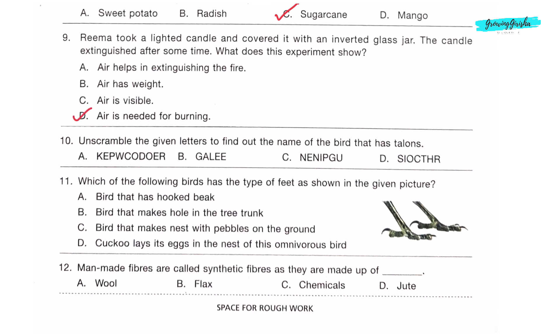Question 10: Unscramble the given letters to find out the name of the bird that has talons. On unscrambling the letters, we get eagle, which is a bird that has talons. So option B is the correct answer. Question 11: Which of the following birds has the type of feet as shown in the given picture? The feet in the given picture is of a perching bird as it has three toes in the front and one toe at the back. It can be a crow. Crow is an omnivorous bird and cuckoo lays its egg in the nest of crow. So option D is the correct answer.